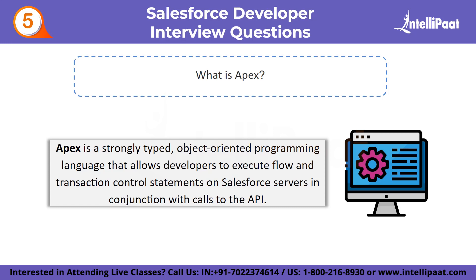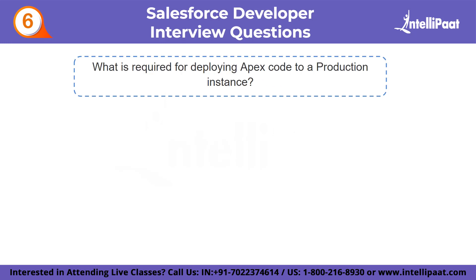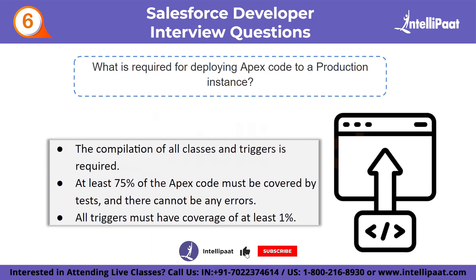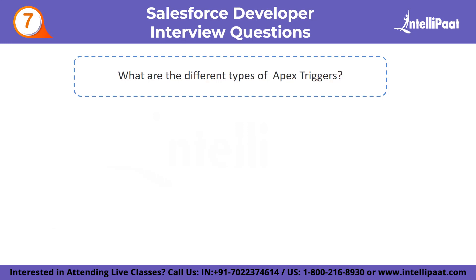Sixth question: what is required for deploying Apex code to a production instance? The compilation of all classes and triggers is required. At least 75% of the Apex code must be covered by tests and there cannot be any errors. Finally, all triggers must have coverage of at least 1%.